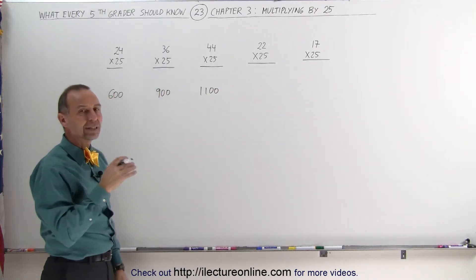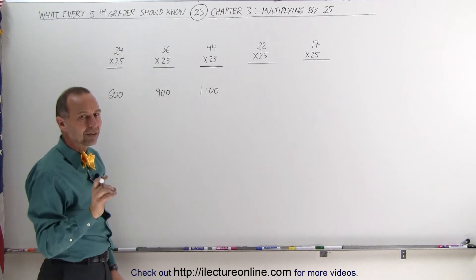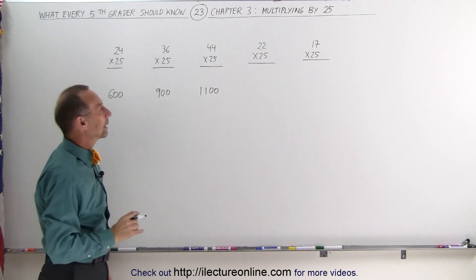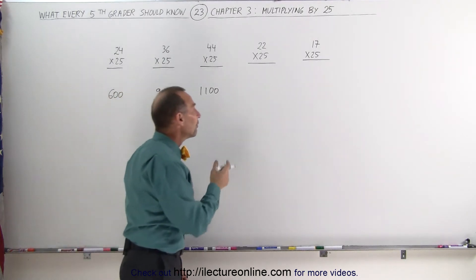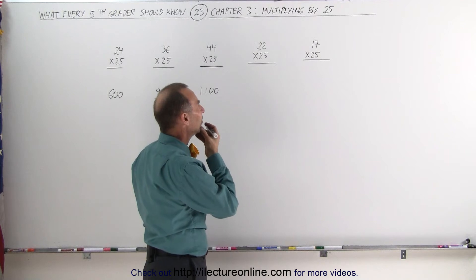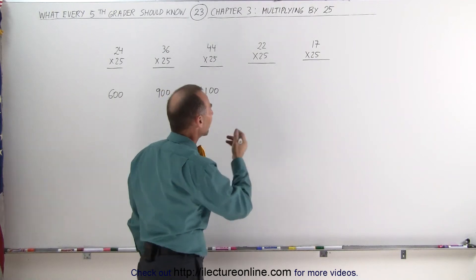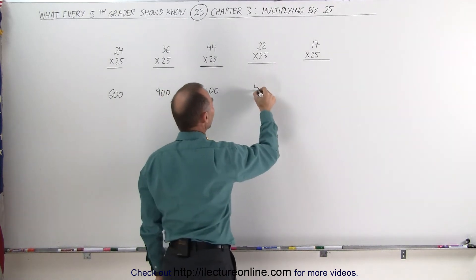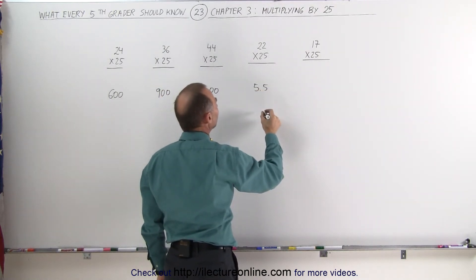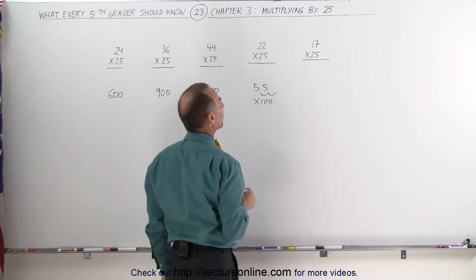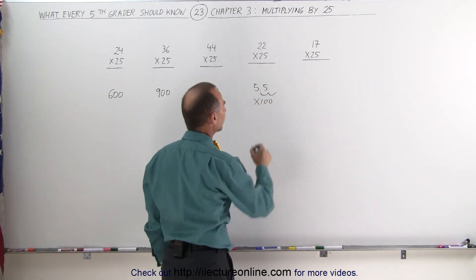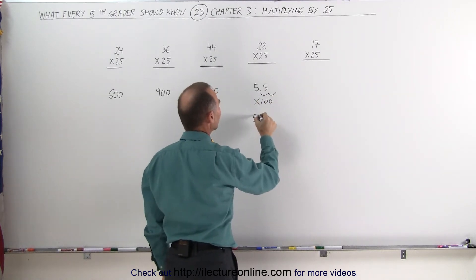But when you get a number like 22, it's a little bit more complicated — just a little, not a lot. 22 divided by 4 is actually 5.5, and then you have to multiply that times 100, which means you're going to move the decimal place over two places. The answer is 550.